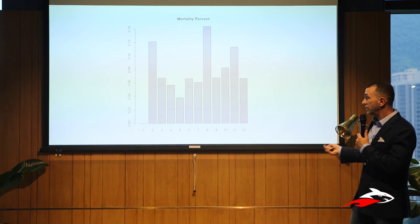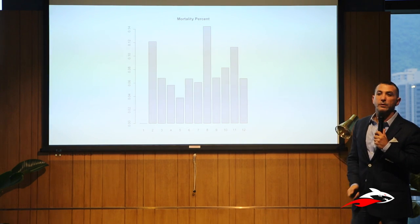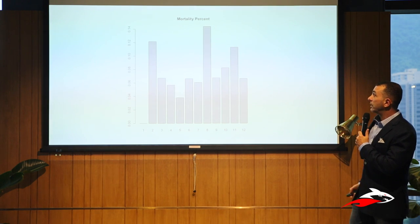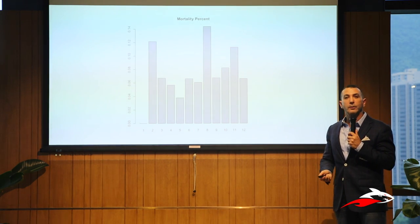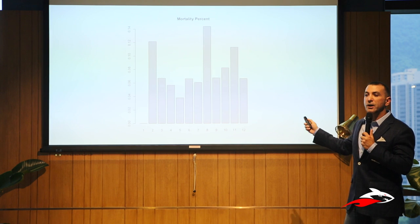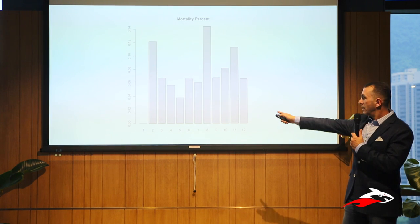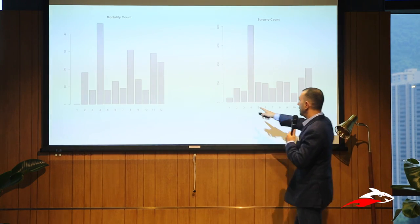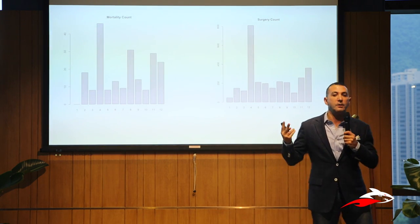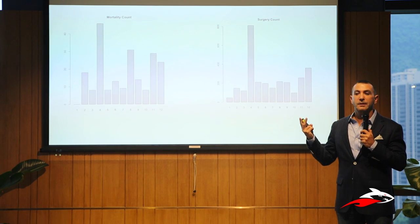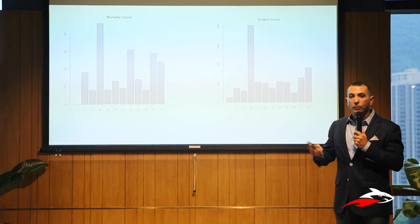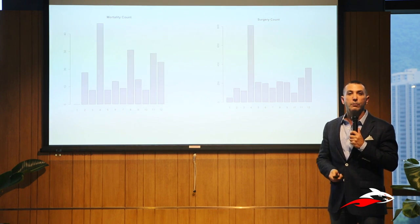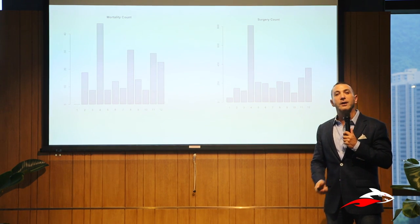Hospital one has a low percentage — maybe they're doing something right. Hospital eight has a really high percentage — maybe they're doing something wrong. The problem is each hospital has a different number of surgeries. Hospital one had very few, so you probably don't have a good estimate. If you operate on only two people and nobody dies, is it safe to say there was a zero percent death rate? Probably not. If you operate on 10,000 people and nobody dies, you could say that with much higher confidence.